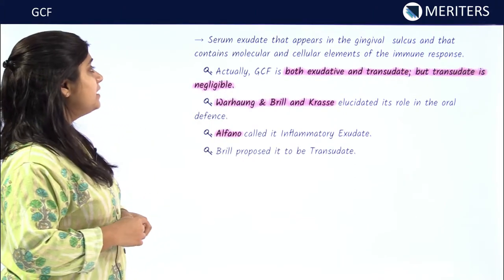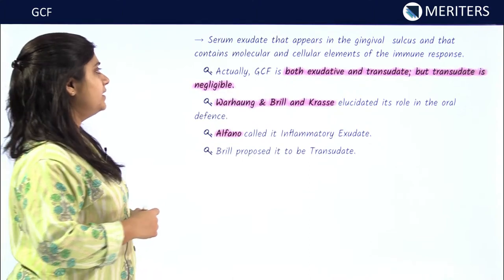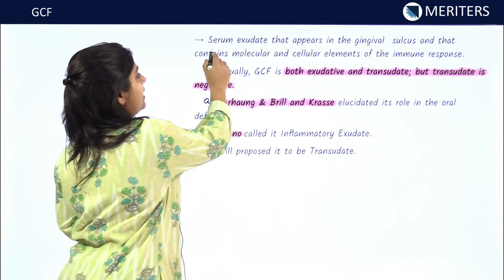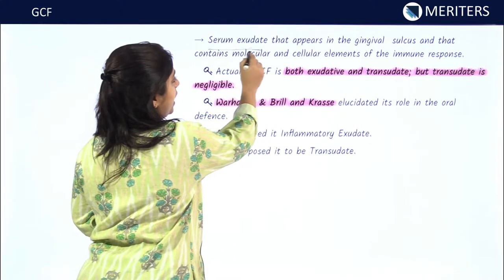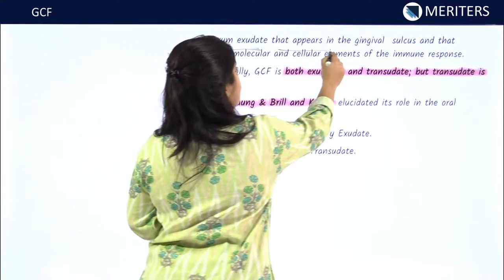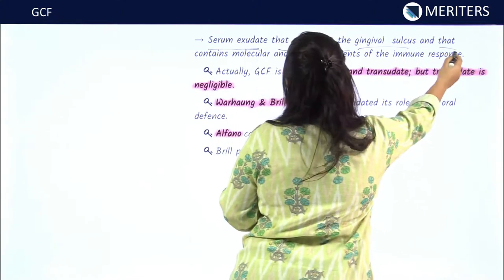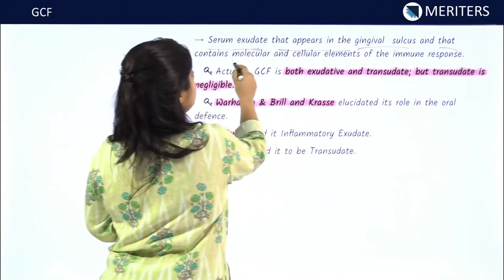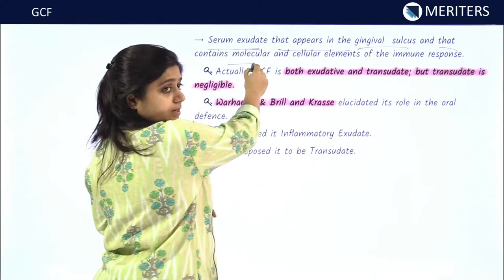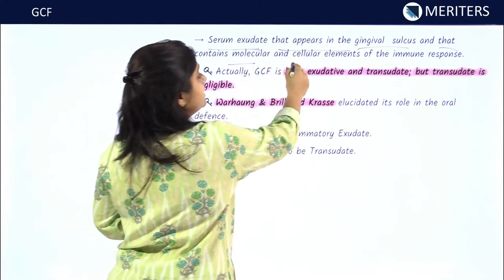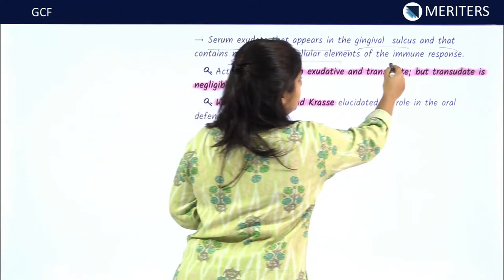Gingival crevicular fluid is the serum exudate that appears in the gingival sulcus and that contains molecular and cellular elements of the immune response.